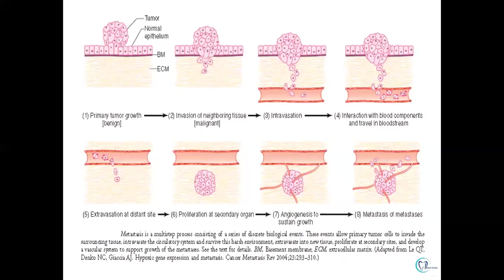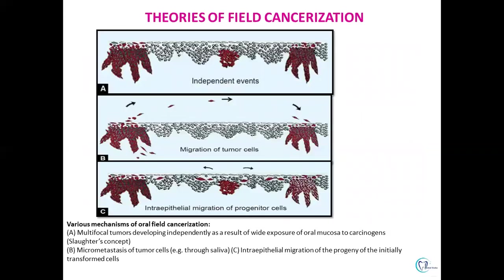Invasion and metastasis proceed as follows: initially there is primary tumor growth within the epithelium, followed by breach in the basement membrane leading to invasion into neighboring tissue and stroma. Cancer cells then intravasate into nearby blood vessels and disseminate through the bloodstream to distant sites, where extravasation occurs and a secondary mass forms. New blood vessel formation — angiogenesis — supports further growth and proliferation, leading to distant metastasis.